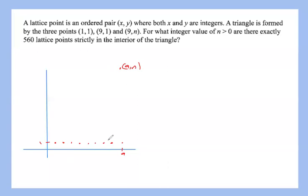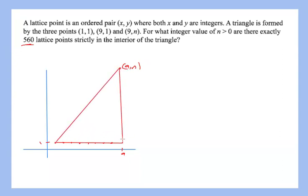The value of n is probably a large number given how many lattice points we need, making it harder to see visually. A helpful approach is to make a bounding rectangle instead, since counting lattice points inside a rectangle is easier than inside a triangle — then we can just take half.